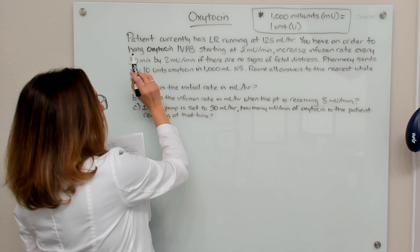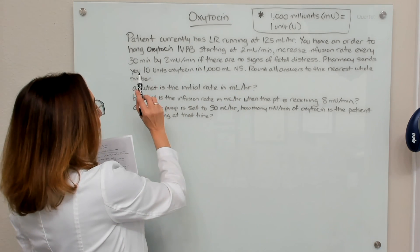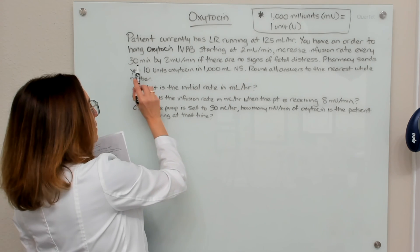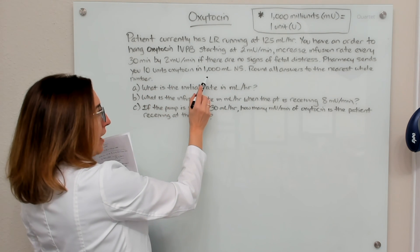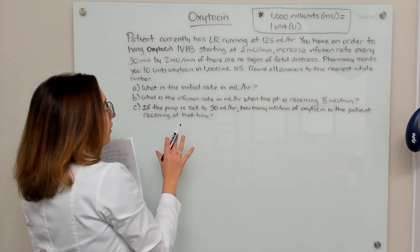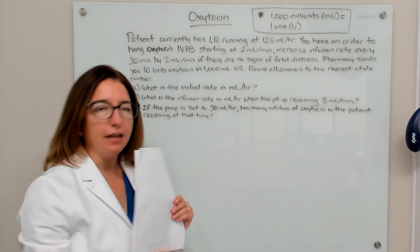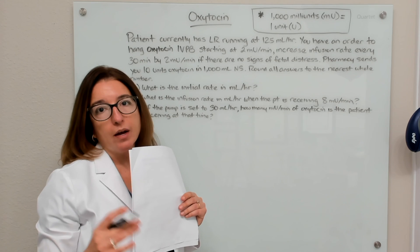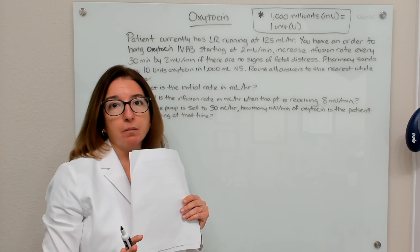Let's look at our problem. Our patient is currently receiving lactated ringers at 125 mL per hour. We have an order to hang oxytocin IV piggyback starting at 2 milli-units per minute and to increase the infusion rate every 30 minutes by 2 milli-units per minute if there are no signs of fetal distress. Pharmacy sends us 10 units of oxytocin in 1,000 mL of normal saline, and we need to round all answers to the nearest whole number. We'll solve these three problems using dimensional analysis first, then ratio and proportion.